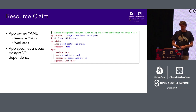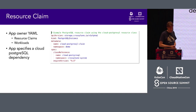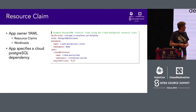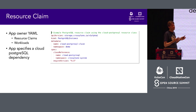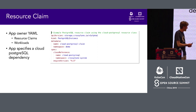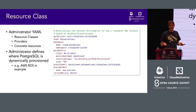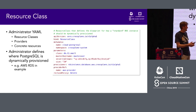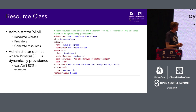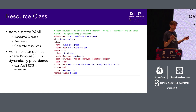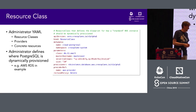We looked at persistent volume claims and storage classes in Kubernetes as a model for resource claims and resource classes. If I have a resource class that is a database, I can make a claim on that as an app developer, enabling dynamic on-demand provisioning. Here's a Postgres example where the resource claim doesn't have environment specifics — I just specify the engine version I need and that it's coming from a cloud Postgres provider. The resource class, defined by the system administrator, contains properties specific to the cloud provider, like instance size or database size on AWS.